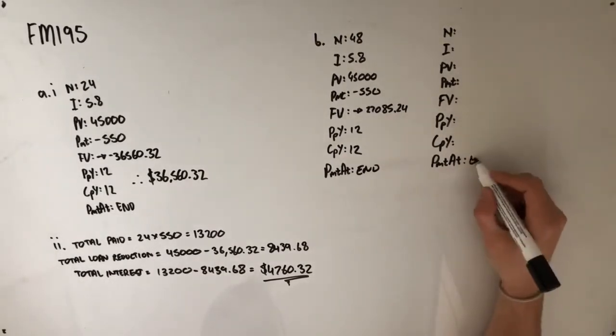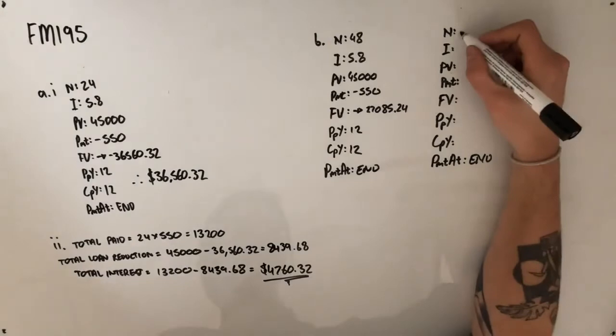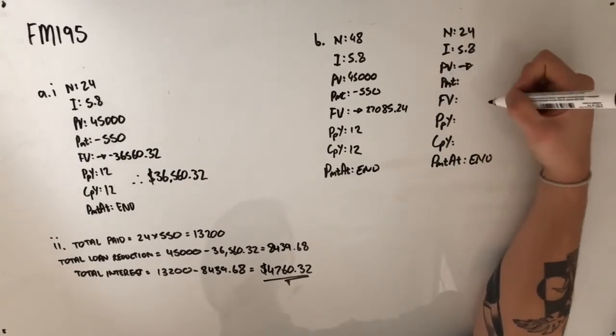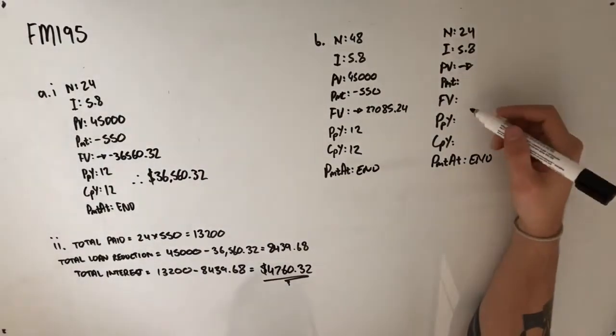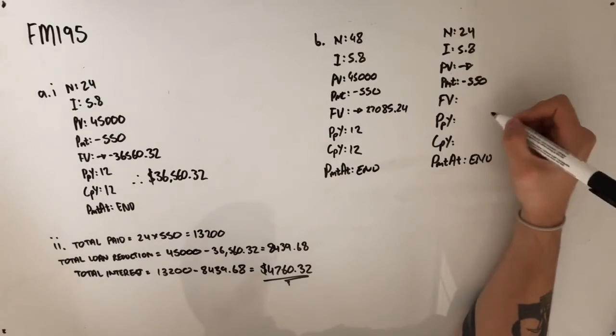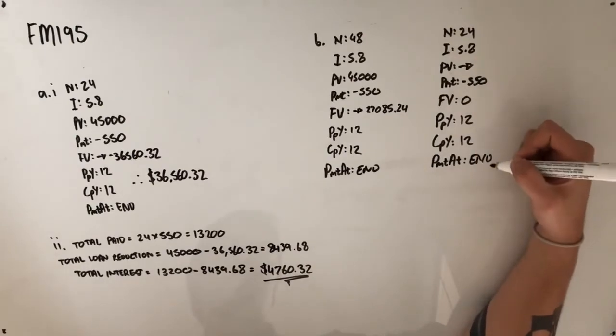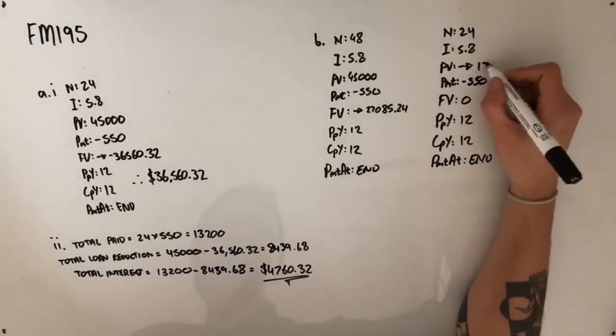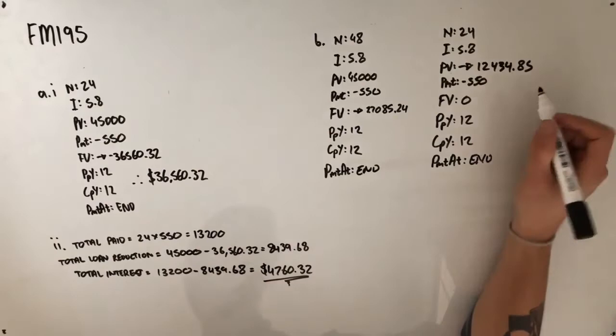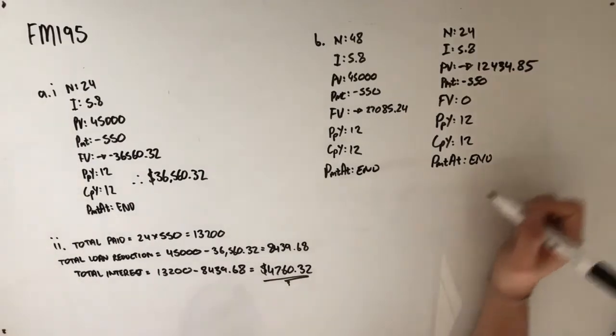Now looking at what the value of the loan will have to be in order to be repaid in another two years. We're using 24 payments this time for the two years, 5.8% interest still. We're actually solving for the present value in this solve. Still $550 a month in payments. Our future value after two years, we want it to be zero. And of course, 12 payments and 12 compounds per year. Putting this into your Finance Solver will give an answer of $12,434.85, which means the value of the loan needs to be $12,434.85 in order to be paid off in another two years.